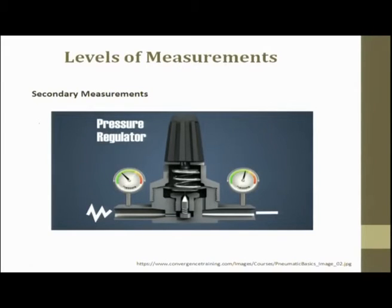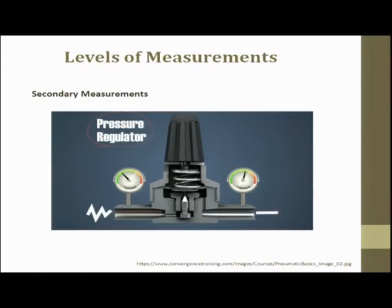In a pressure gauge, the primary signal (pressure) is transmitted to a translator and the secondary signal (length) is transmitted to an observer's eye — this is secondary measurement. For example, in a pressure regulator, there is a fluid flowing; you operate the knob to change the pressure, and a pressure gauge measures and tells you the value. The change in pressure is converted to a change in length to give the reading.